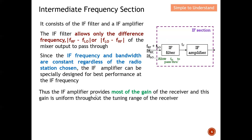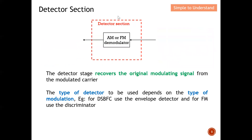The IF amplifier provides most of the gain of the receiver, and this gain is uniform throughout the tuning range. Because the IF amplifier is specifically designed at this optimized IF frequency, it is able to boost the signal at the best possible performance compared to an RF amplifier.